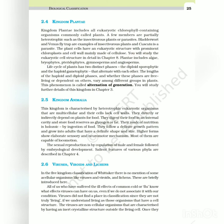Kingdom Animalia is characterized by heterotrophic eukaryotic organisms that are multicellular and their cells lack cell walls. They directly or indirectly depend on plants for food. They digest their food in an internal cavity and store food reserves as glycogen or fat. Their mode of nutrition is holozoic by ingestion of food. They follow a definite growth pattern and grow into adults that have a definite shape and size. Higher forms show elaborate sensory and neuromotor mechanism. Most of them are capable of locomotion. The sexual reproduction is by copulation of male and female followed by embryological development. Salient features of various phyla are described in chapter 4.